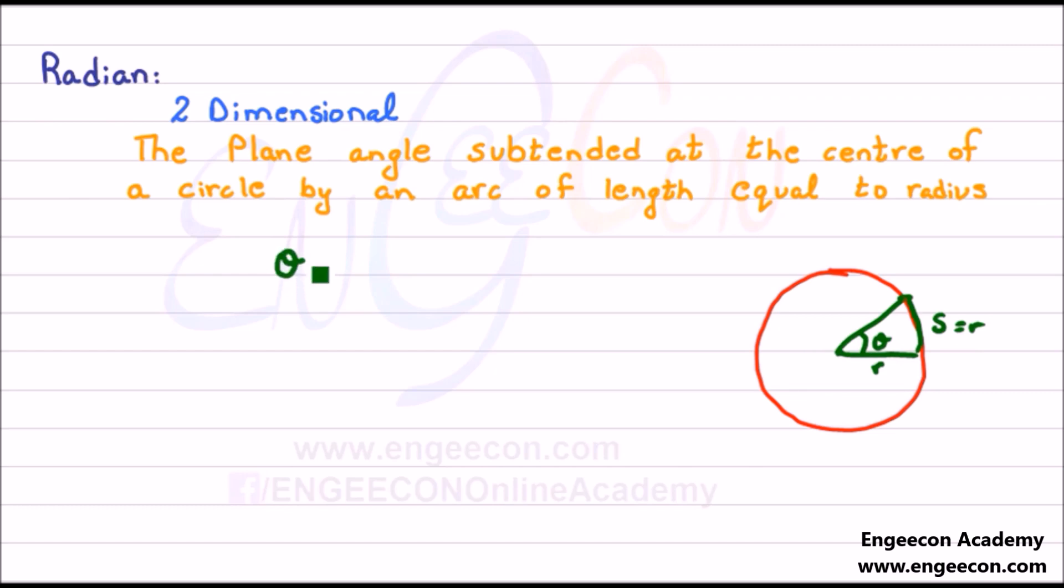As we know that angle is equal to this arc divided by radius. This arc is equal to the radius and divided by r which is equal to 1 radian. Now the question arises: the circle has how many radians?